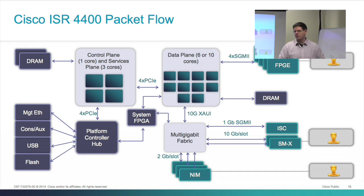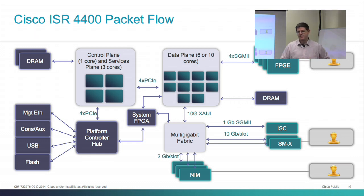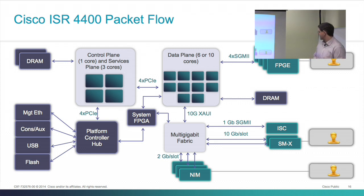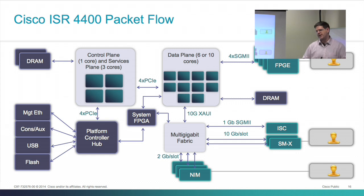Packet flow is straightforward: the control plane programs the data plane, like most split control/data plane platforms, and then the control plane is largely done — there is no punt path through it. The data plane is responsible for 100% of packet processing, whether coming from front-panel gigabit ports, SMs, or network interface modules. Everything goes through the data plane and out through the multi-gigabit fabric, except for traffic that stays local to the same VLAN, which can stay on the multi-gigabit fabric without going through the data plane.